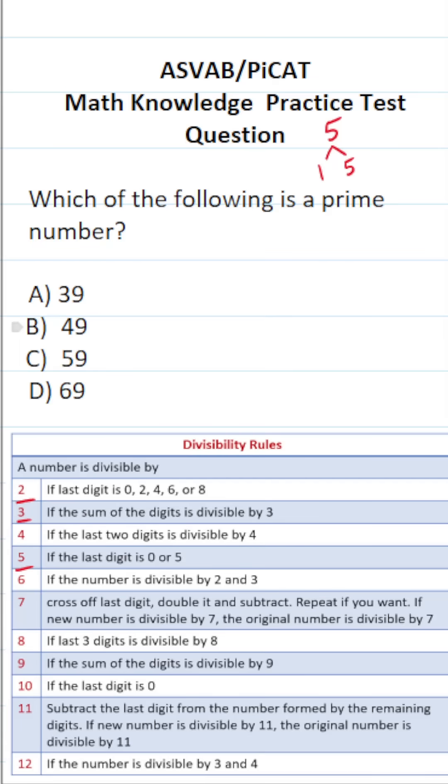Right away, you should say to yourself, 49 divided by seven is seven. So since 49 is divisible by something other than one and itself, we know right away 49 is not a prime number.